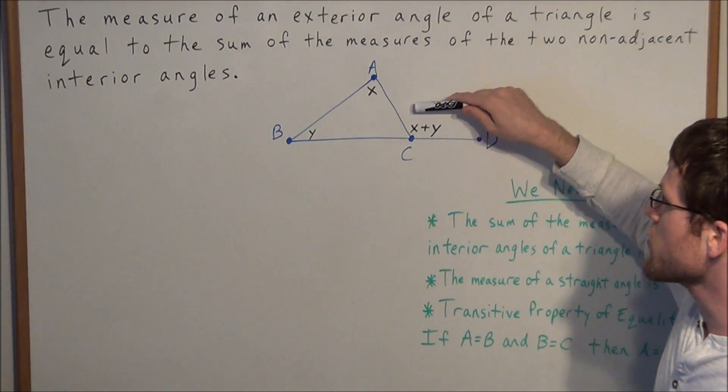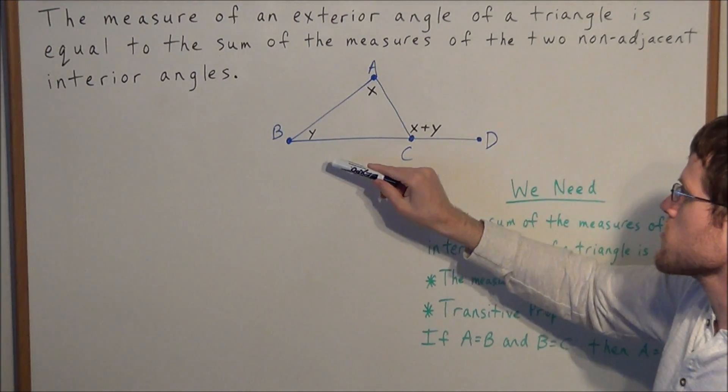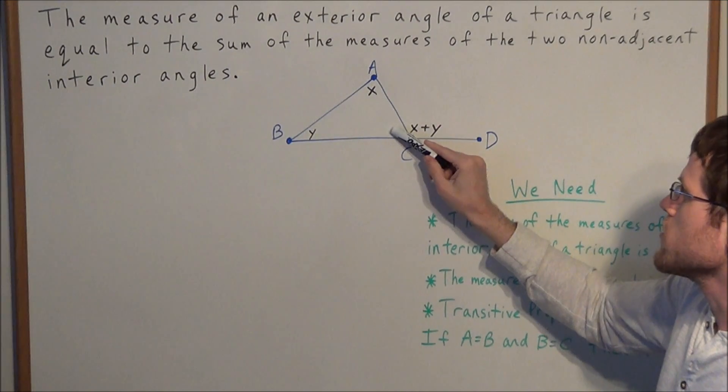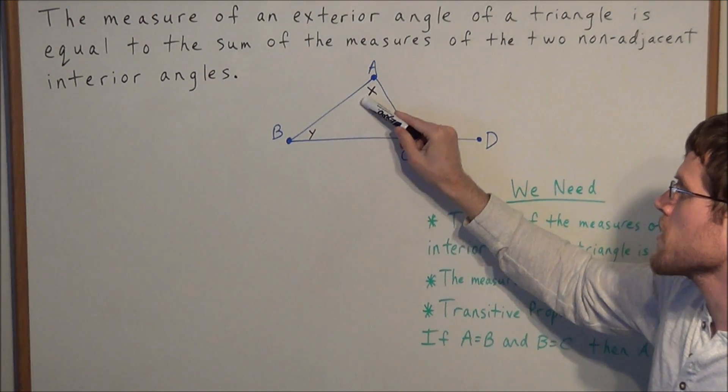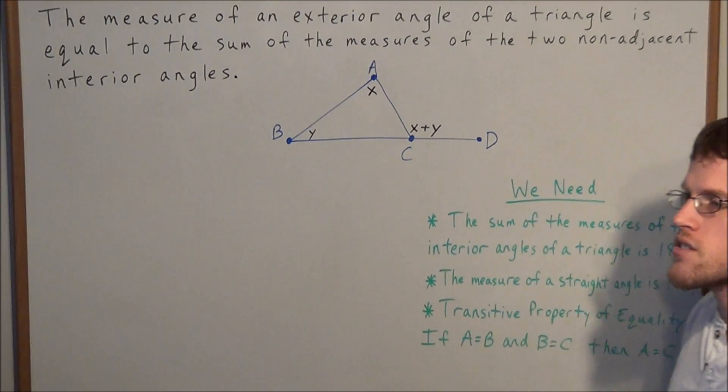The only adjacent interior angle we would have would be at angle C. We're looking at the non-adjacent interior angles, and when we add these two together, we get the exterior angle.